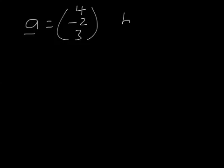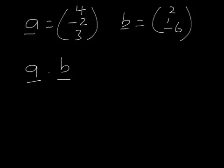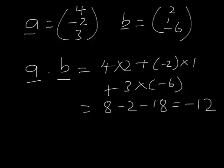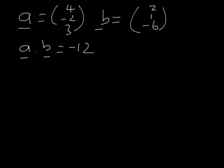So what does this mean? Suppose we've got two vectors (4, -2, 3) and (2, 1, -6). The dot product is a1·b1 + a2·b2 + a3·b3, which is 8 + (-2) + (-18), so that's -12. So the dot product a dot b in this case is -12. You end up with a number, or a scalar — that's why it's called the scalar product, because the answer gives you a number.